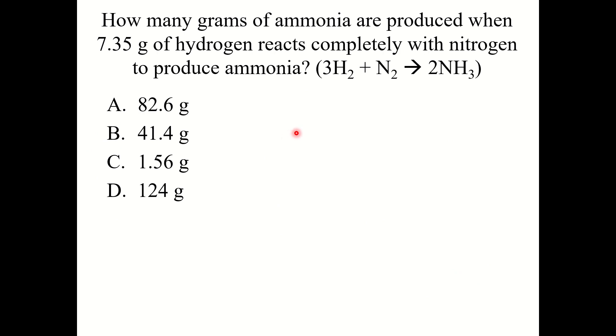Let's have you try a knowledge check question here. How many grams of ammonia are produced when 7.35 grams of hydrogen reacts completely with nitrogen to produce ammonia? Just assume that you have enough nitrogen. So how much ammonia is produced when you react 7.35 grams of hydrogen?